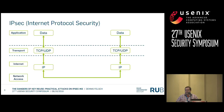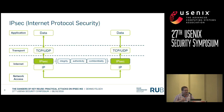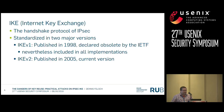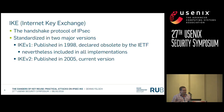IPSec is found at layer 3, just above the IP layer. It protects everything sent via TCP or UDP, and provides integrity, authenticity, and confidentiality. The handshake protocol of IPSec is called IKE — Internet Key Exchange. It exists in two versions: IKEv1, published in 1998, is now declared obsolete by the IETF but is still present in all implementations and operating systems. The newer version, IKEv2, published in 2005, is the current standard with only minor updates since.